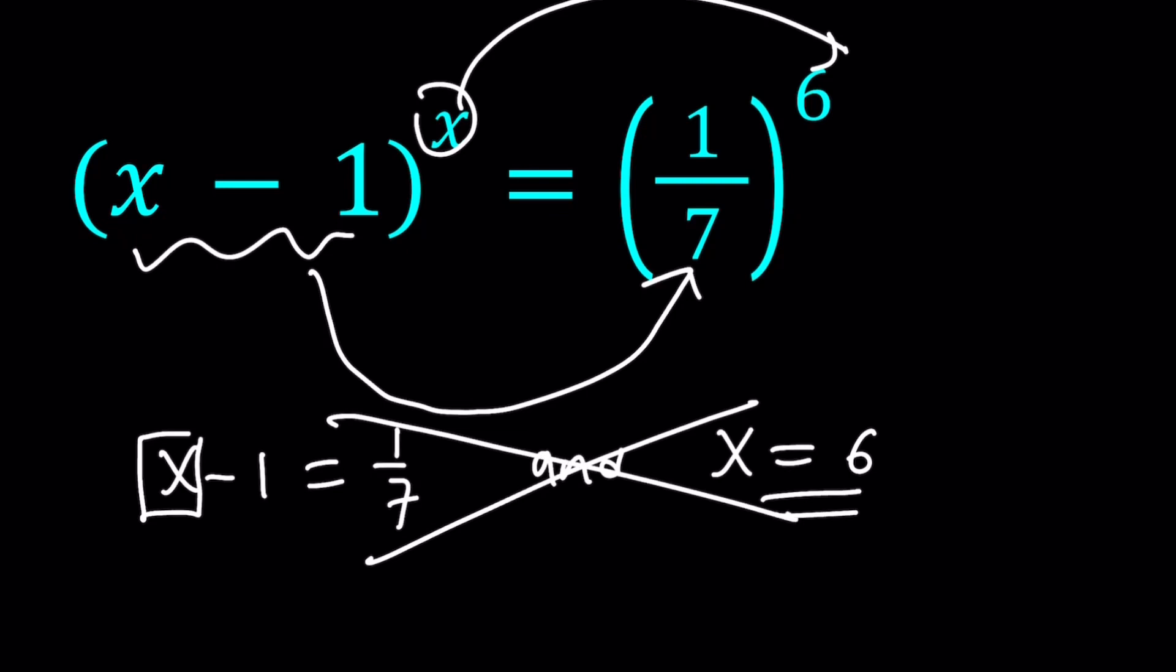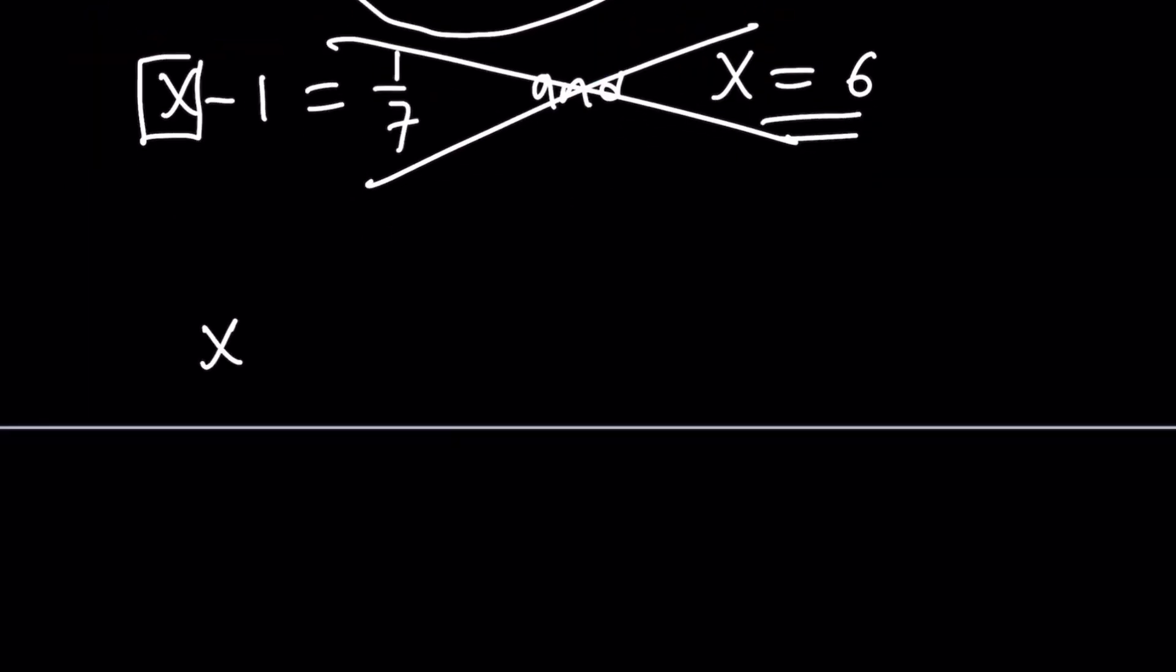So, as is, we can't find a direct solution. So let's go ahead and manipulate this a little bit. The first thing, and I'm going to rewrite the original problem for you. The first thing that comes to mind is to turn this into a negative exponent. Why?